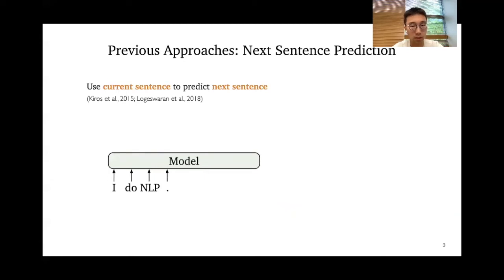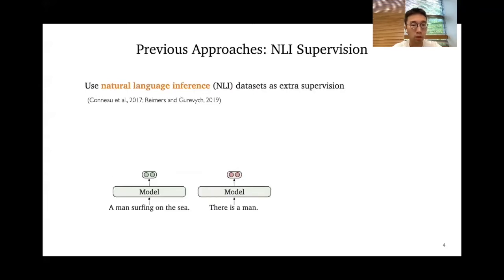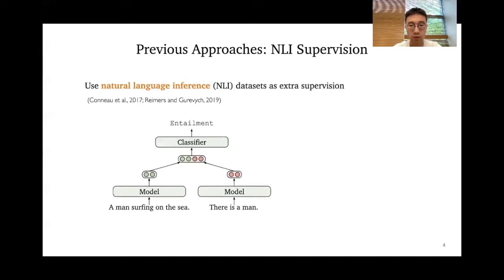There are already many works about sentence embeddings. Some adopt the simple unsupervised signal of using the current sentence to predict the next, assuming this learns good sentence embeddings. We've also seen work utilizing existing supervised datasets. For example, in natural language inference or NLI datasets, we have sentence pairs and labels of whether they have an entailment relation. Those works encode NLI pairs into sentence embeddings and combine them into a classifier to predict the relation. This, so far, produces the strongest sentence embeddings.